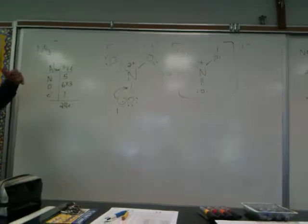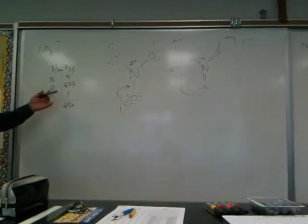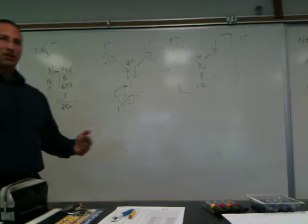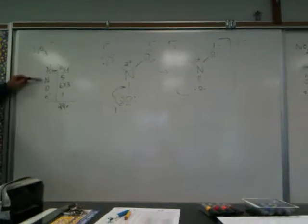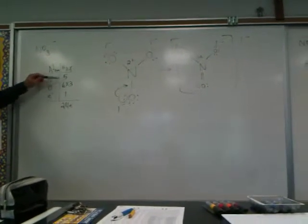If an element is in group 15, it's got 5. If an element is in group 16, it's got 6 valence electrons, and so on. So nitrogen is in group 15, it has 5 valence electrons.